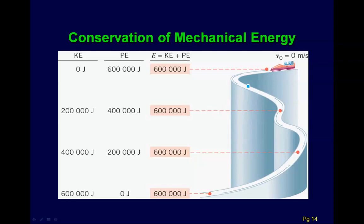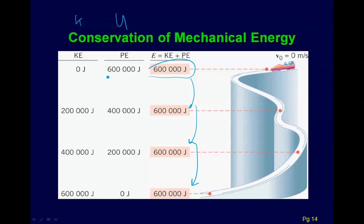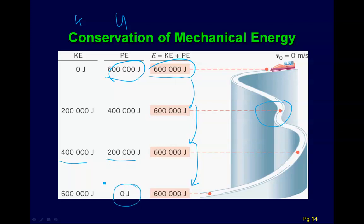Here's a basic example: a bobsled going down a frictionless ice surface. Since there is no friction, it conserves mechanical energy. It has a total of 600,000 joules, and that stays the same at every point. Initially it has 600,000 joules of potential energy. As it descends, that transfers into kinetic energy — at one point 200,000 kinetic and 400,000 potential, then 400,000 kinetic and 200,000 potential. At the bottom, it's zero potential and all kinetic. The total is always 600,000 joules.